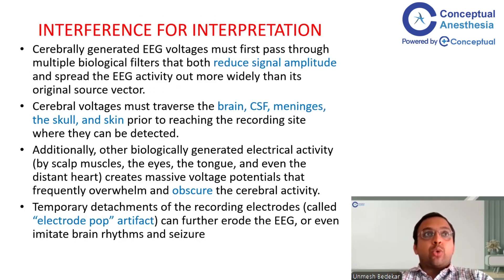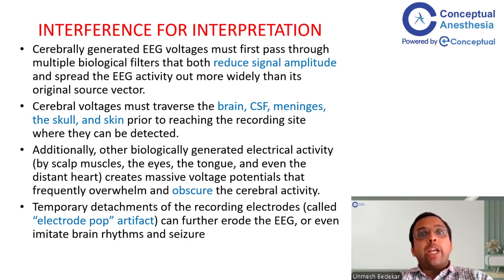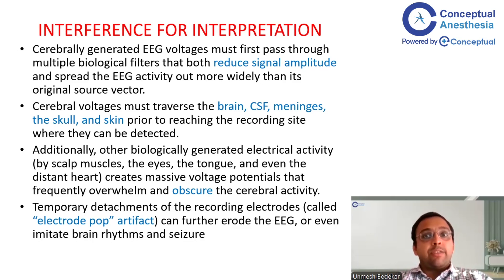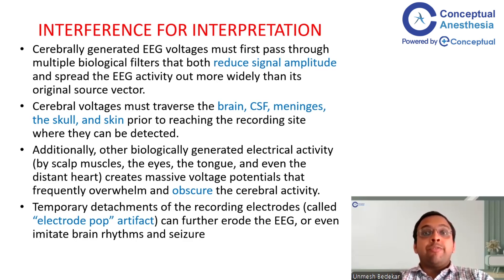Since EEG electrodes are placed on the scalp, cerebrally generated voltages must pass through multiple biological filters that reduce signal amplitude and spread EEG activity more widely than its original source. These voltages must traverse the brain, CSF, meninges, and ultimately the skin before reaching the recording site. Additionally, other biologically generated electrical activity — from scalp muscles, eyes, tongue, and even the distantly placed heart — along with minor muscle movements, may create massive voltage potentials that frequently overwhelm and obscure the cerebral activity.